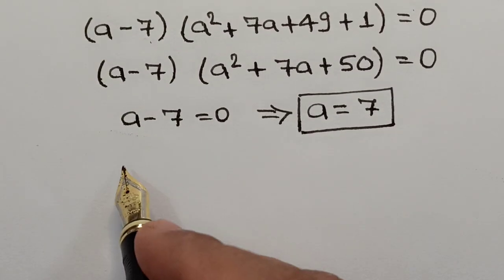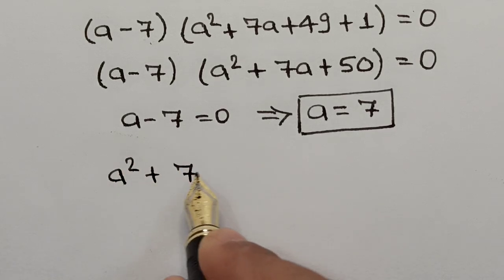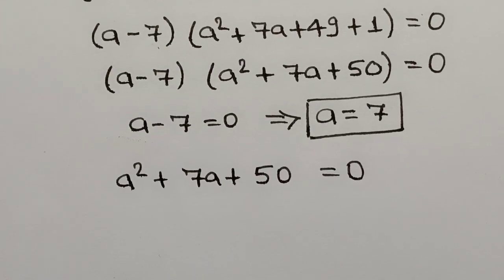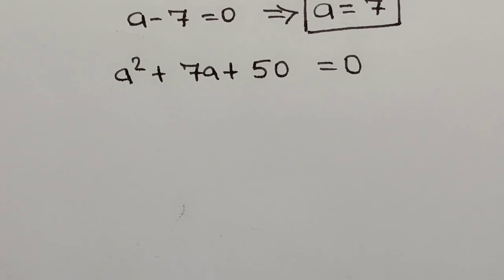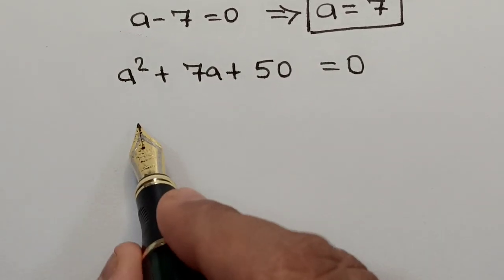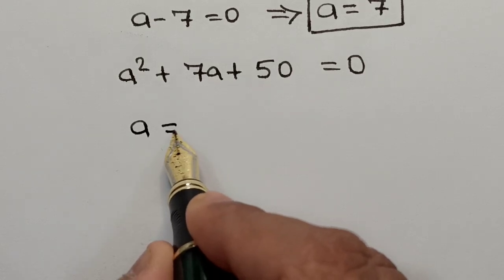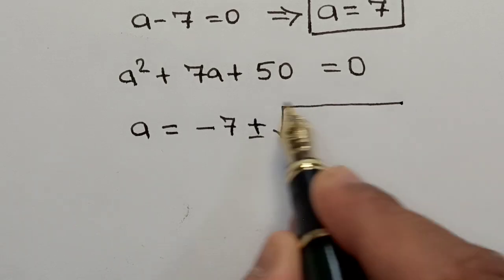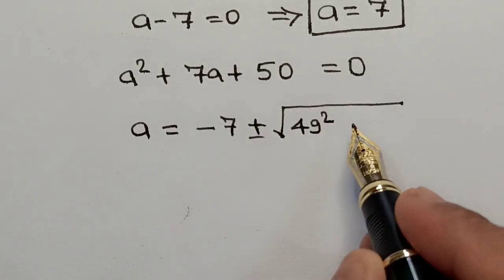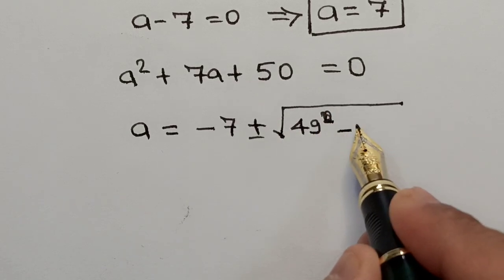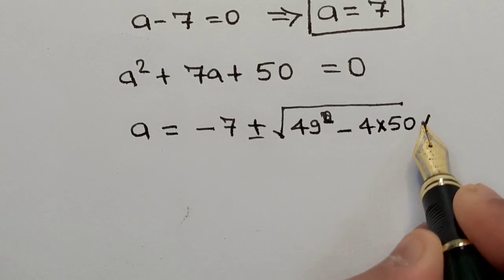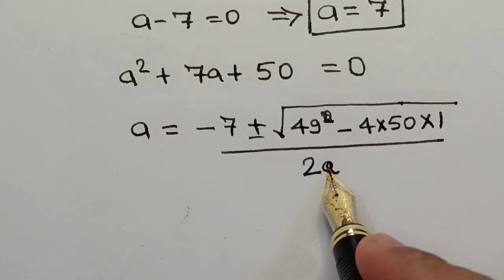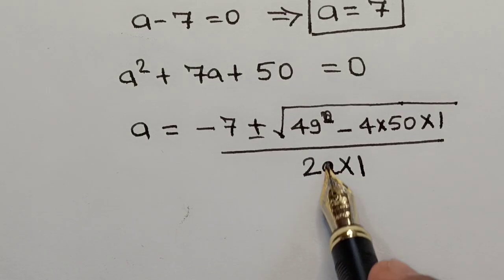Now let us solve the second equation A² + 7A + 50 = 0 using the quadratic formula. We apply A = (-B ± √(B² - 4AC)) / 2A, where here A = 1, B = 7, C = 50, giving A = (-7 ± √(49 - 200)) / 2.